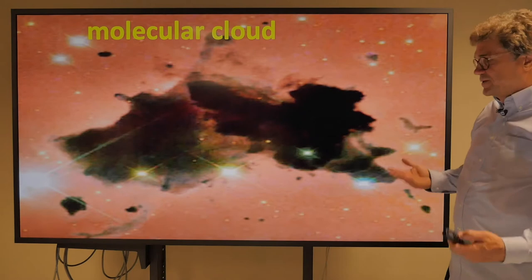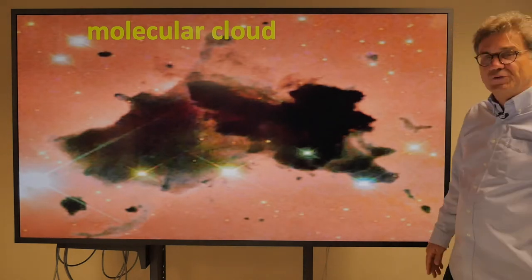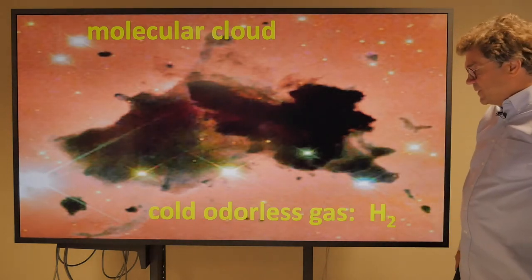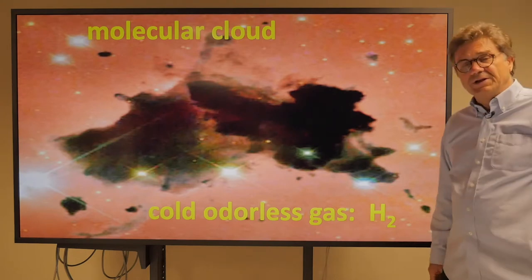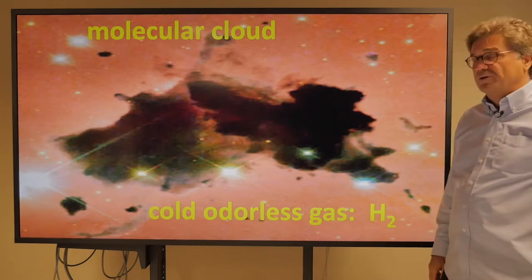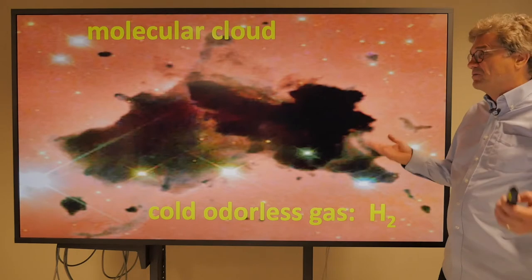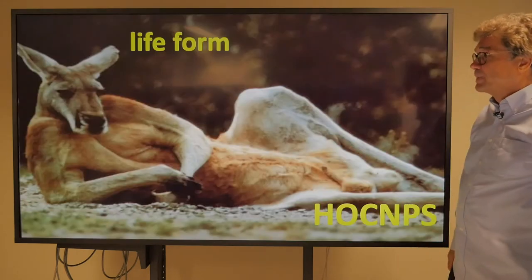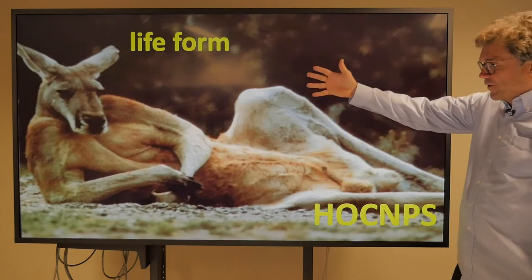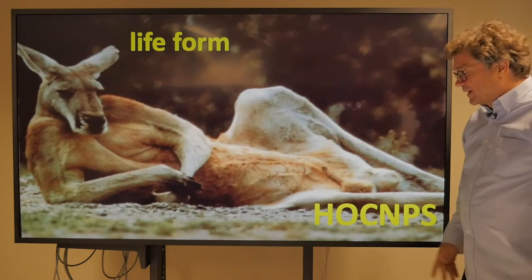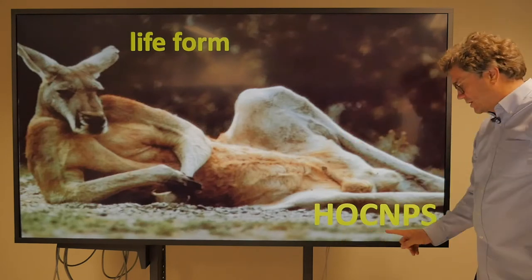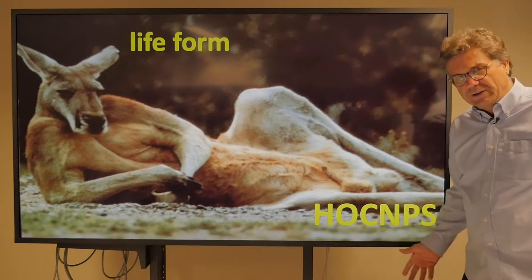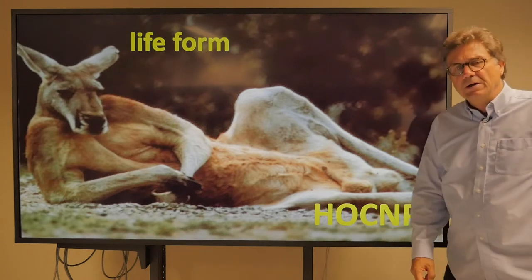We know that the Sun and the Earth started out as an overdensity in a molecular cloud, made out of a cold, odorless gas called molecular hydrogen, mostly, with some other contaminants at about the 1.4% level by mass. We know that life forms today are made out of hydrogen, oxygen, carbon, nitrogen, phosphorus, and sulfur at about the 98% level.